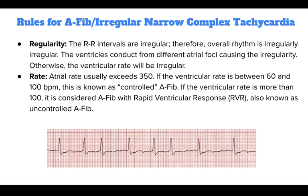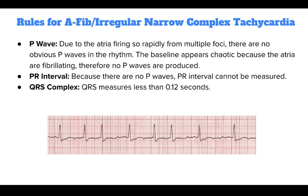For AFib, an irregular narrow complex tachycardia, the RR intervals are irregular, therefore the overall rhythm is irregular. The ventricles conduct from different atrial foci, causing irregularity. The atrial rate usually exceeds 350. If the ventricular rate is 60 to 100 BPM, this is known as controlled AFib. If the ventricular rate is more than 100, it is considered AFib with rapid ventricular response, or RVR, also known as uncontrolled AFib. Due to the atria firing so rapidly from multiple foci, there are no obvious P waves; the baseline appears chaotic because the atria are fibrillating. Therefore the PR interval cannot be measured, and the QRS complex is less than 0.12 seconds in length.